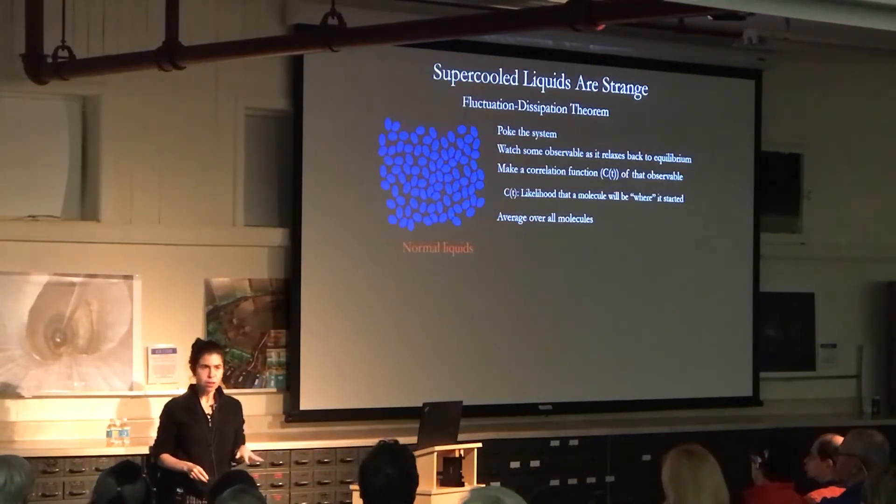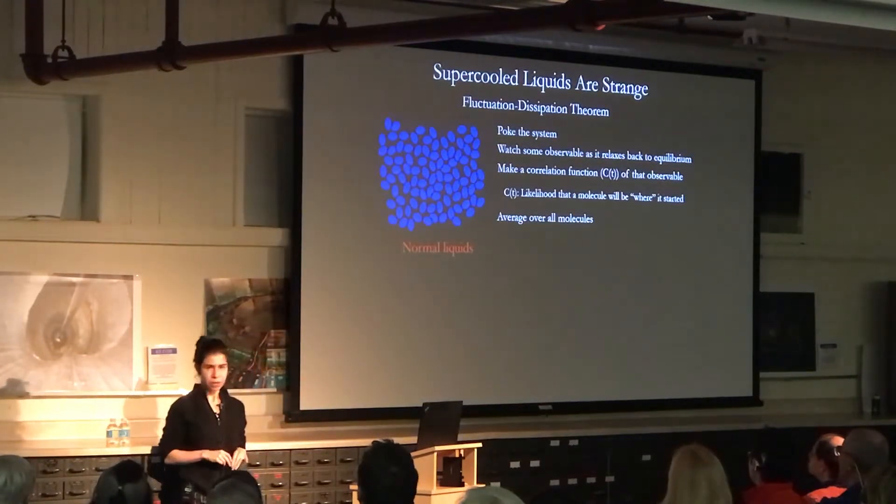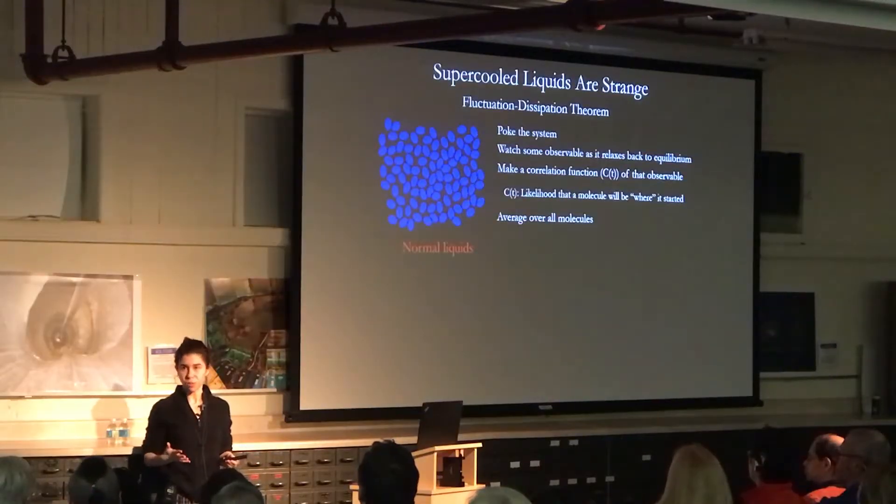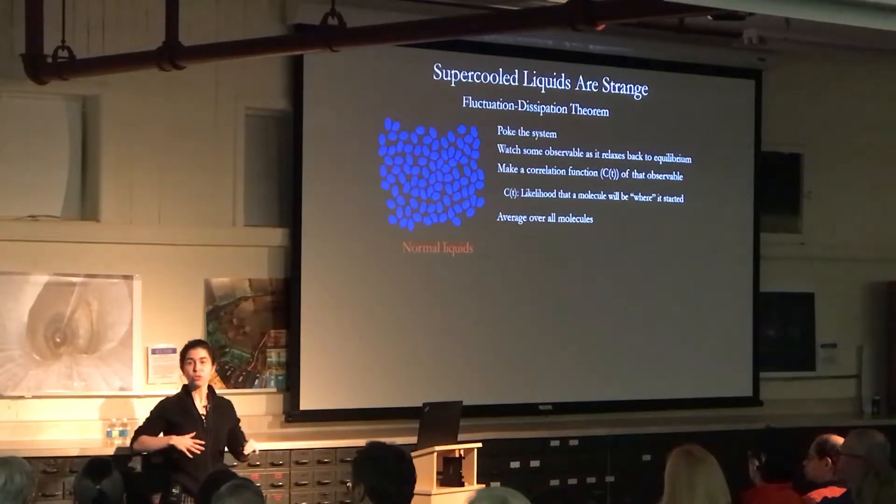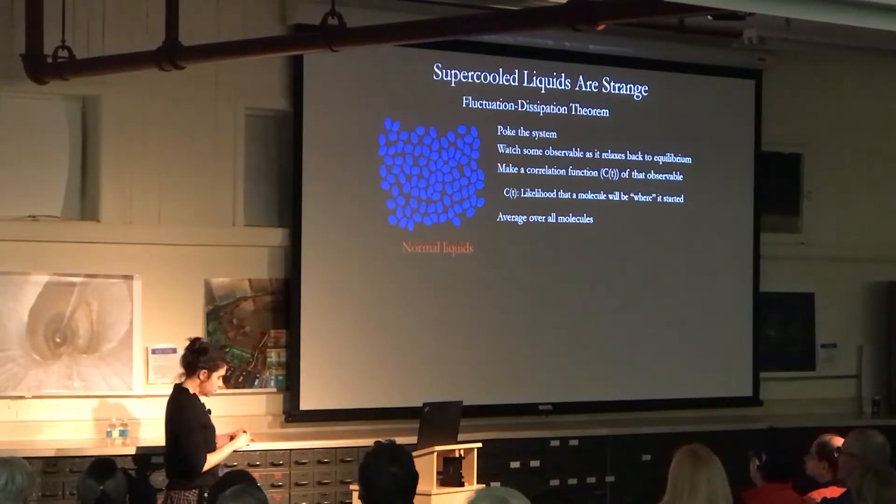We don't have to poke it at all, and that's due to something called the fluctuation dissipation theorem. That means if you poke a system and watch it relax back to equilibrium, you can actually get the same information by not poking it and just watching how the molecules fluctuate without poking. So actually we don't poke it. We just watch what the molecules are doing, and their fluctuations tell us the same information that we would learn if we did poke it.